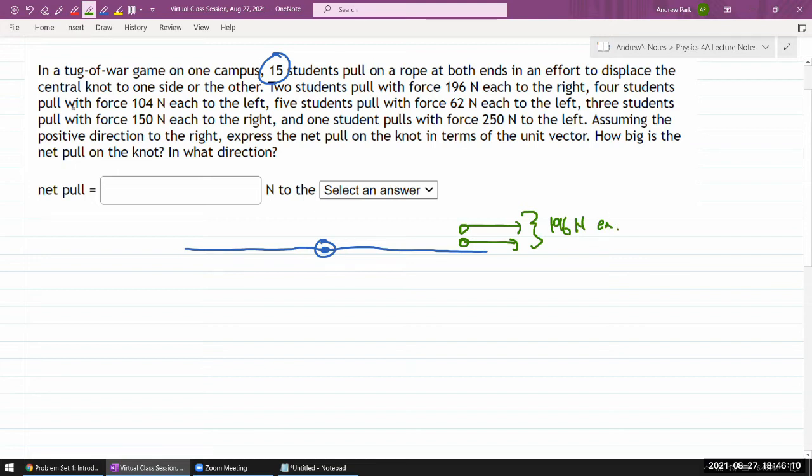Four students pull with force 104 newton each to the left. Okay, so one, two, three, four. I'm just doodling. There's no real rule on how you doodle. The main thing is I want to make sure I capture all the information that's given in the question. 104 newton. And this is one of those things where if you're doing a timed assessment, you should be careful because you could waste a lot of time doodling. But on a homework, this is the place where you are not in any time pressure. You just make sure you are not skipping steps.